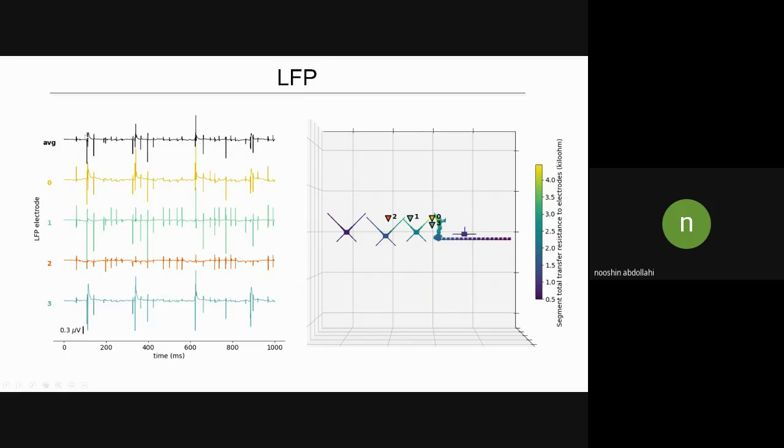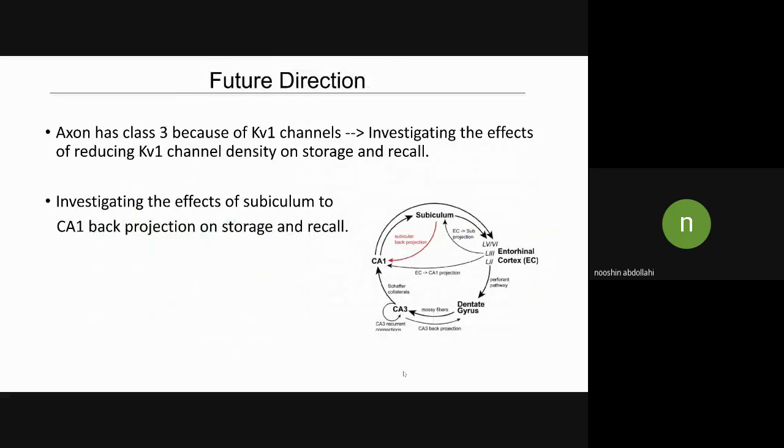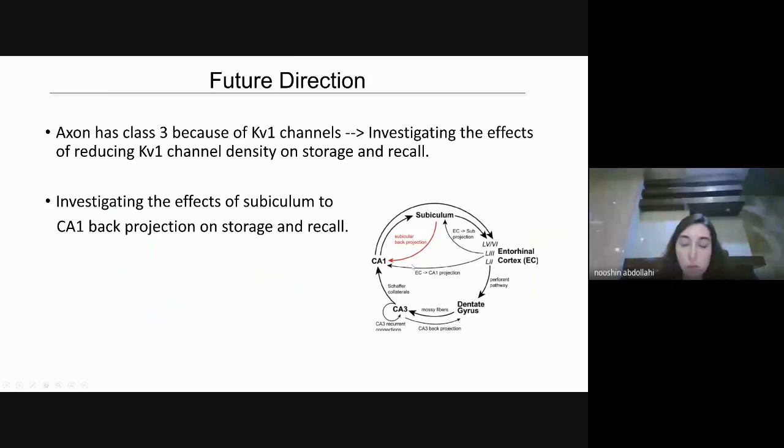Moving forward, as I mentioned, we discovered that axon has class 3 excitability because of KV1 channels. What I want to do as the next step is to reduce the density of KV1 channels and investigate the effects of that on storage and recall. Also, it's been shown that CA1 neurons send projections to subiculum. And there are evidences that there is back projection from subiculum to CA1 neurons, but its role on storage and recall is not well understood. So I want to investigate that as well.